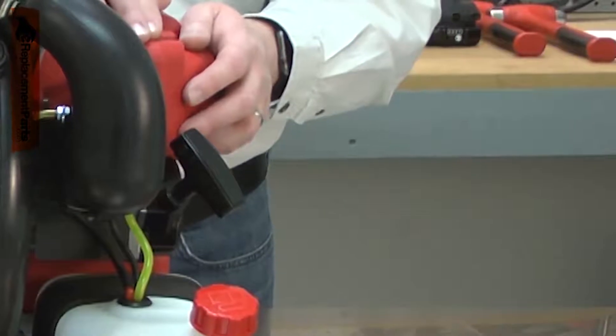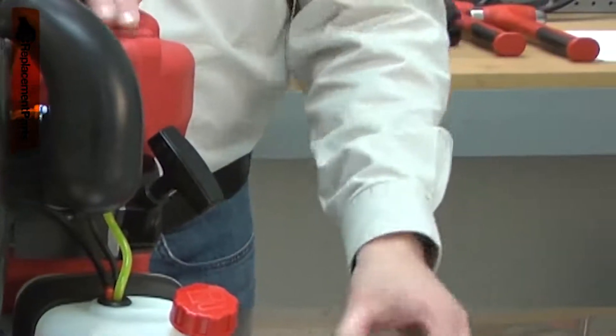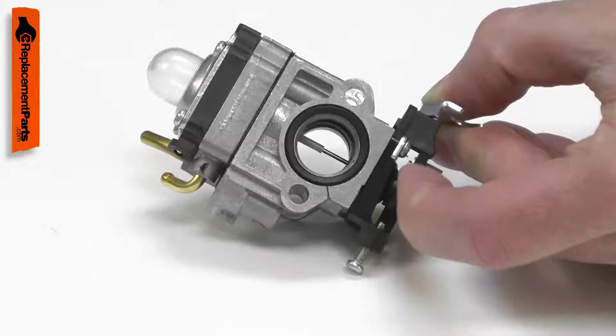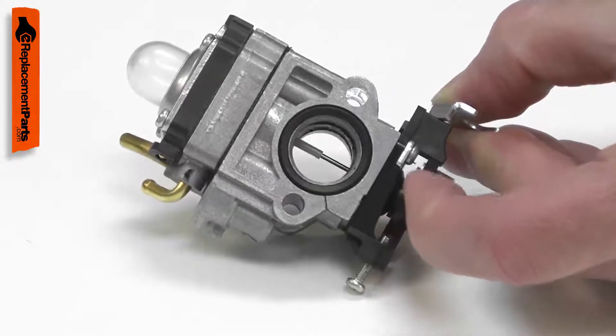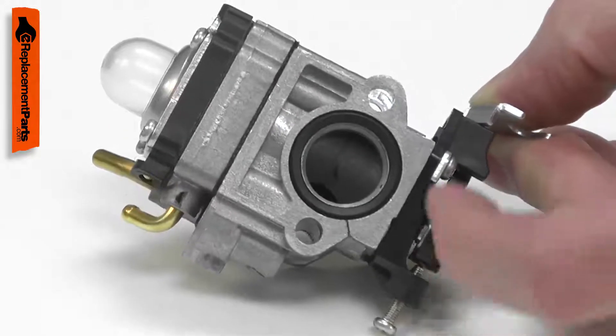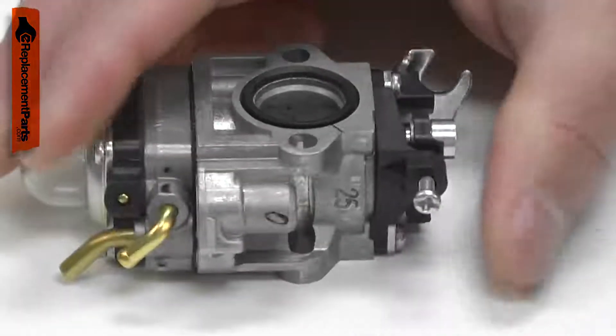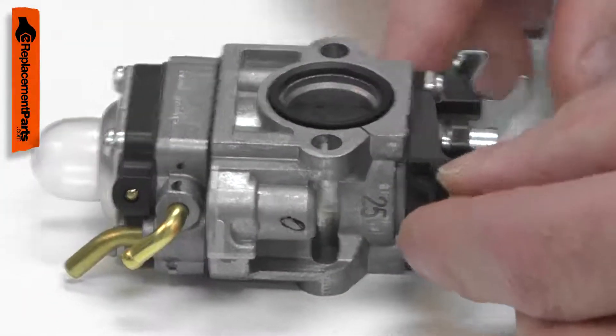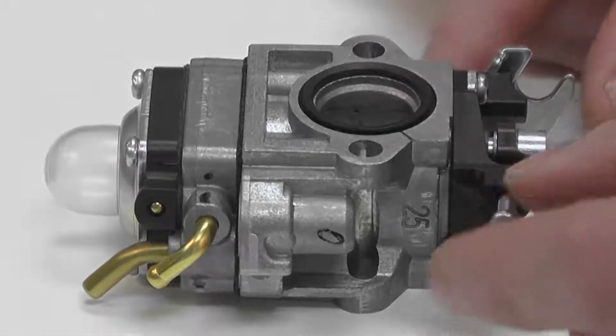Leaving fuel sitting in the carburetor for a month or more can cause varnish and corrosion to form inside, restricting or stopping the flow of fuel. A carburetor can be cleaned and rebuilt, but often it's cheaper or faster to simply replace it. Replacing your tool's carburetor is a repair you can do yourself, and I'm going to show you how.